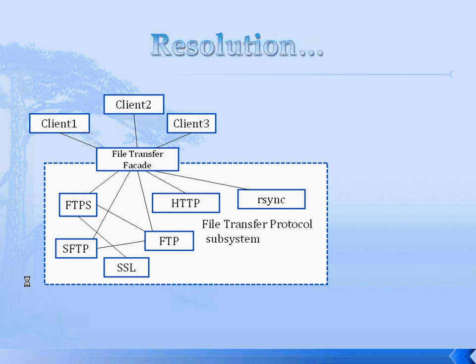The clients do not know which class addresses their request. They only know that they need to send their request to the Facade class, and it will take care of forwarding the request to the components of the subsystem.